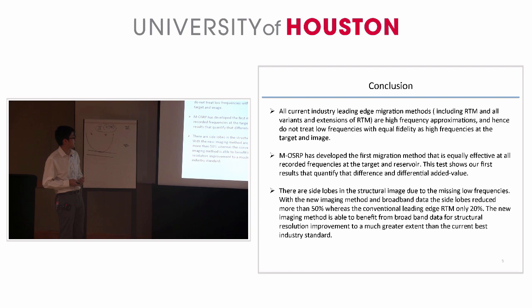From this test, we can see the new image method, which is CLIBO3. For CLIBO3, the side lobe reduced for more than 50% with broadband data. For CLIBO2, RTM reduction is only 20%.